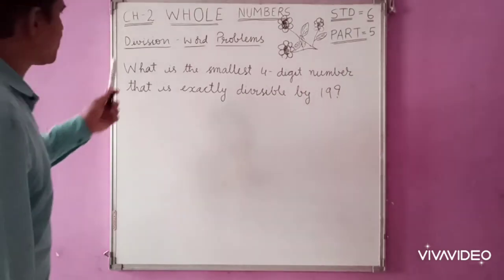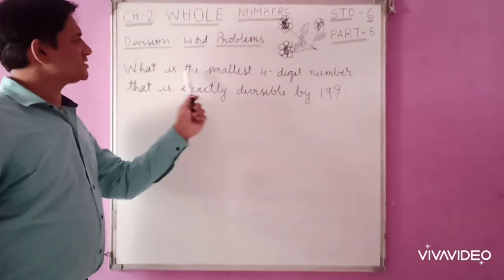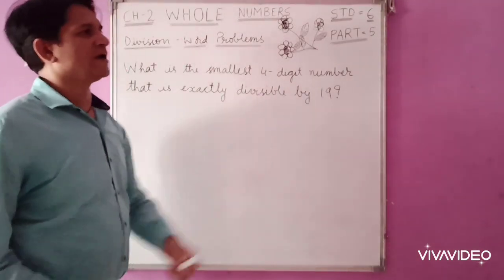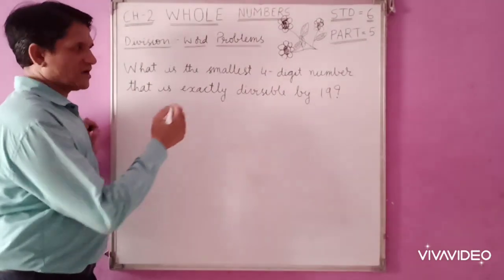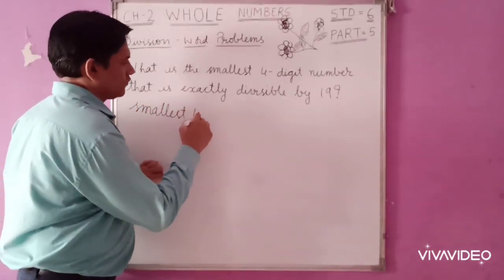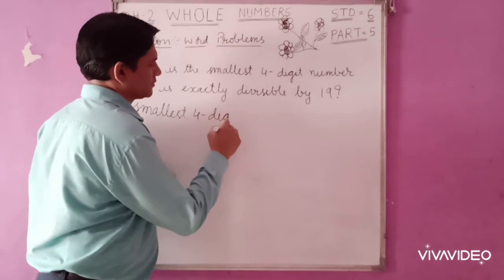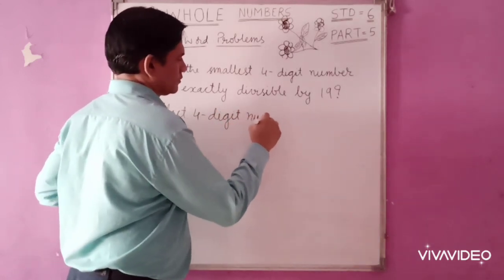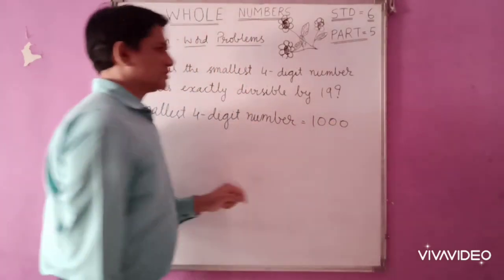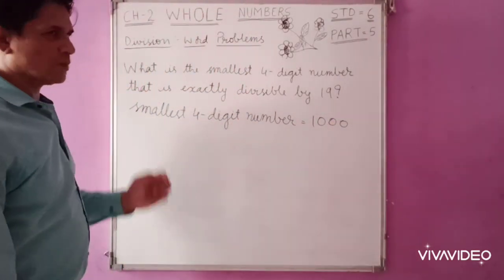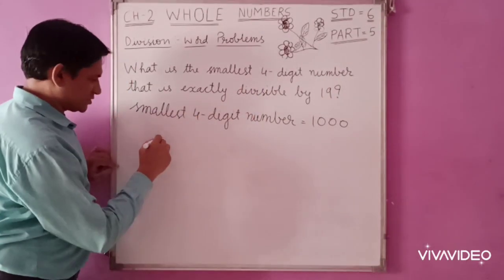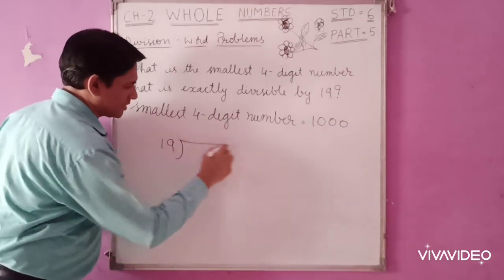Now we have another problem. What is the smallest 4-digit number that is exactly divisible by 19? So first, the smallest 4-digit number is equal to 1000. That is the smallest 4-digit number. Next, exactly divisible by 19.